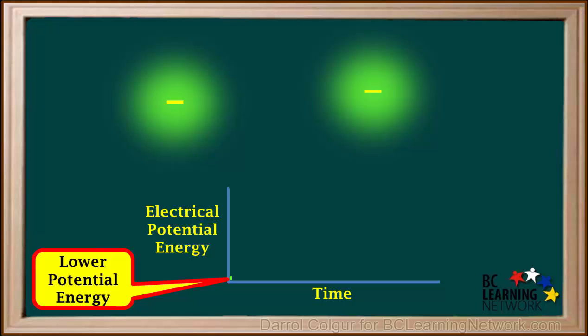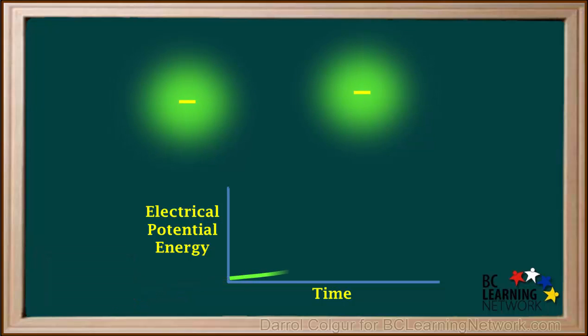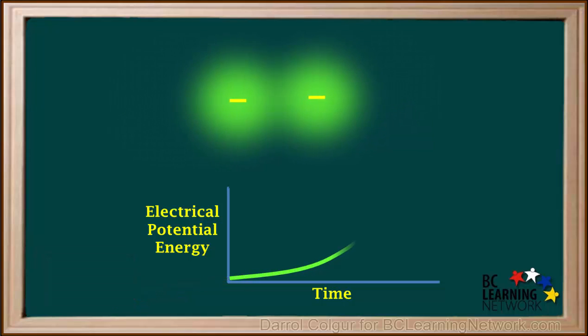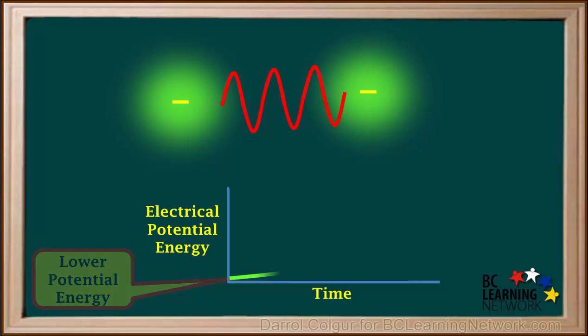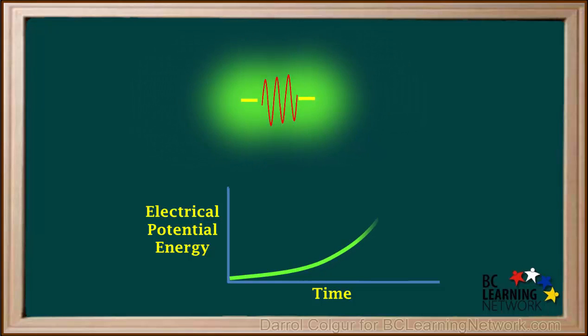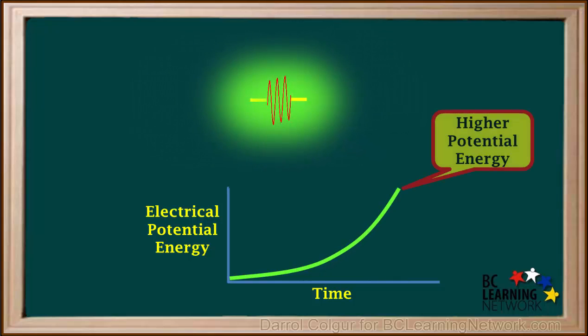But as they approach each other, they feel more repulsive force, and their electrical potential energy increases. It is much like having a sort of invisible spring between them that is compressed as they move together. A compressed spring has high potential energy.